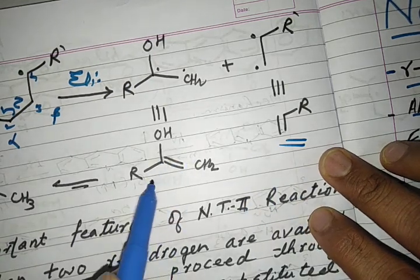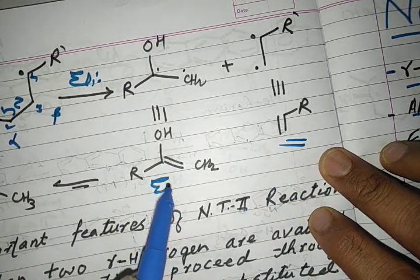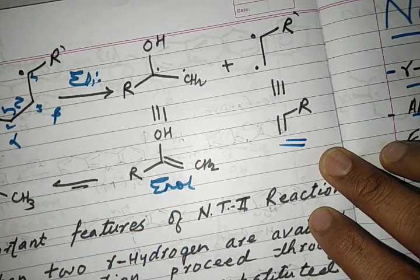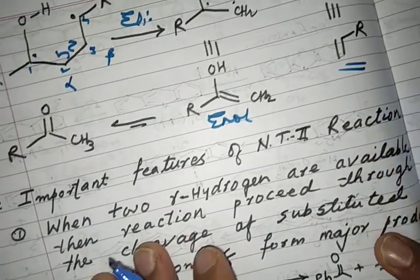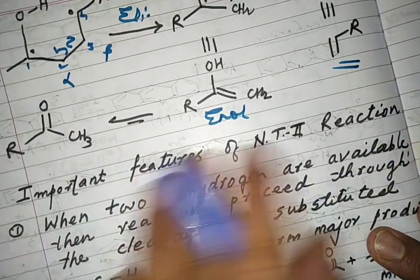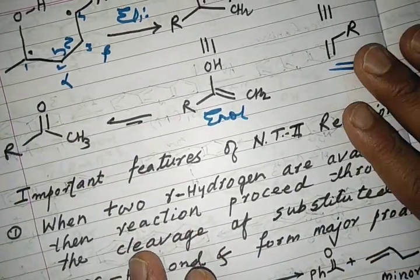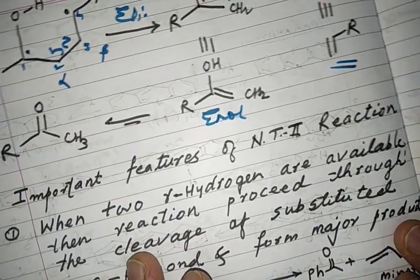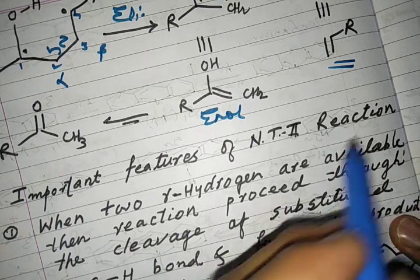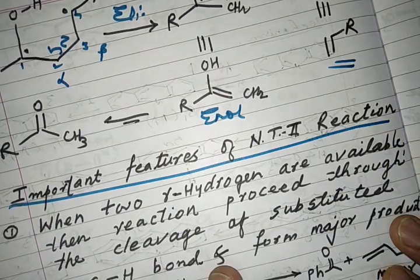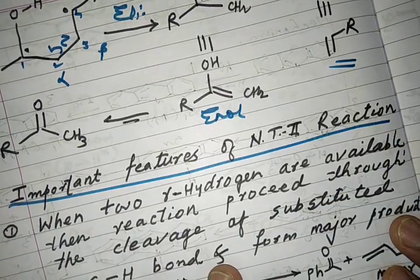The alkene product is initially formed as an enol, which then converts to the ketone keto form. These are the two products of the Norrish Type 2 reaction. Now let us discuss other important features of this reaction.